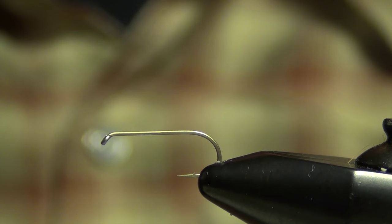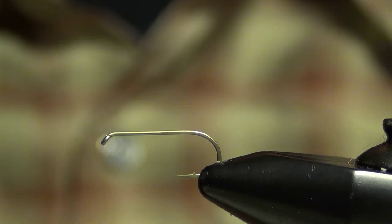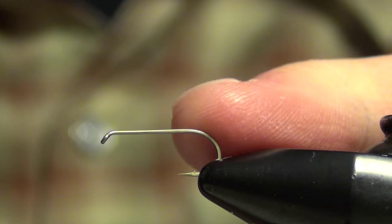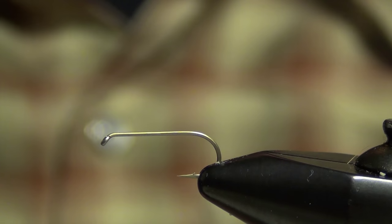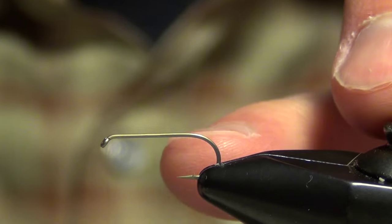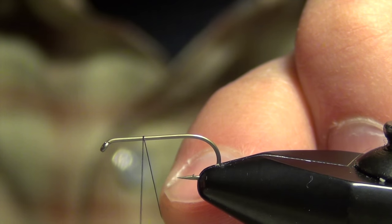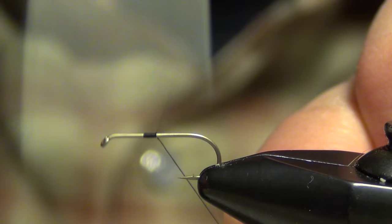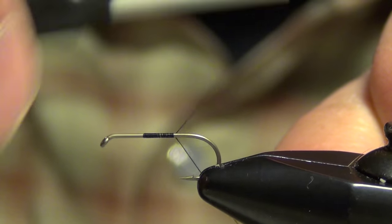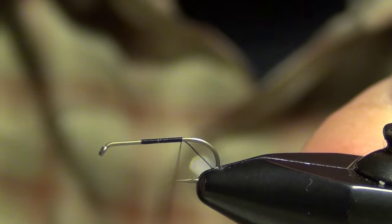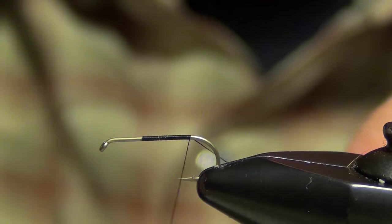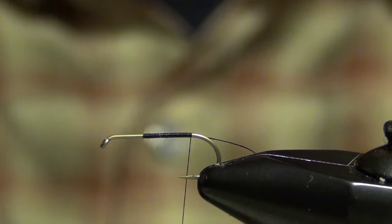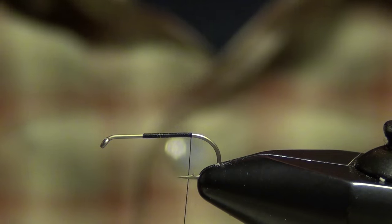In this video we're going to tie a fly called the Adams irresistible. First thing I'm going to do is start with the Tiemco 100 standard dry fly hook. Next, I'm going to take my thread and start it about a third of the way back from the eye of the hook. All this is going to do is give me a guide on where to stop on the body of the fly.